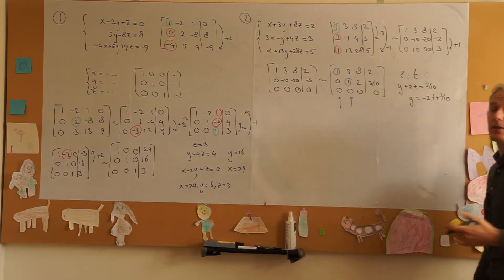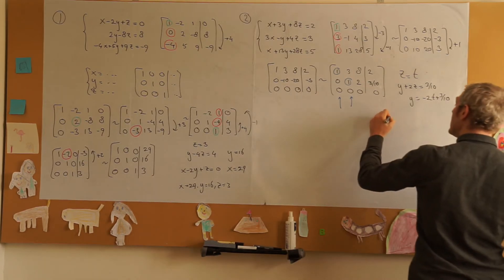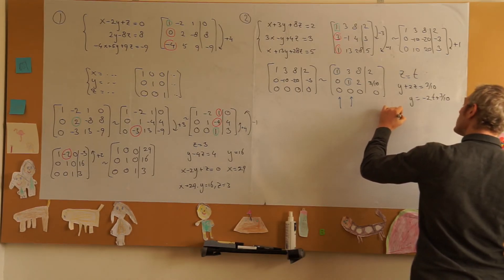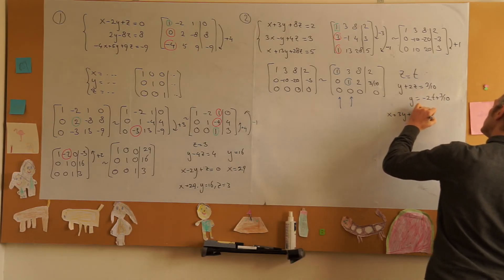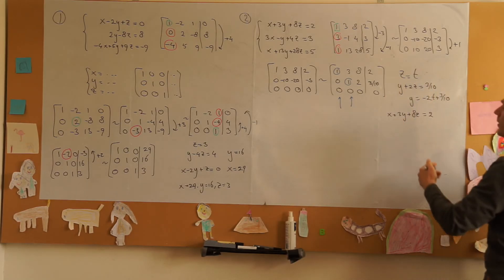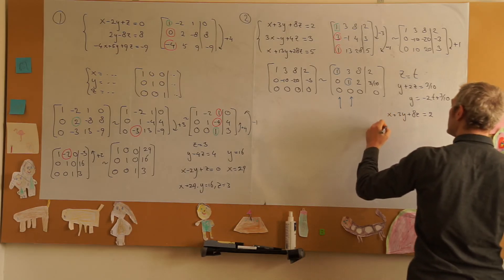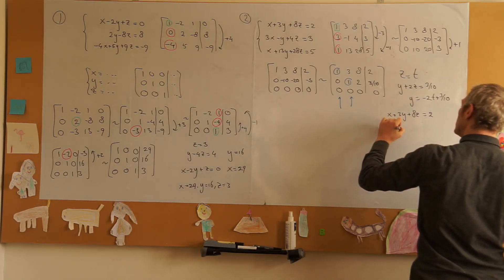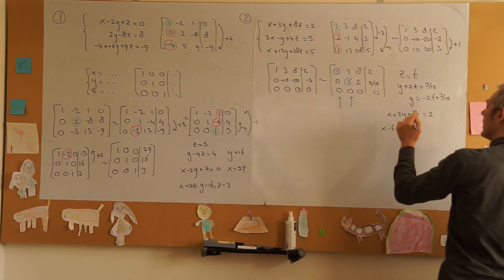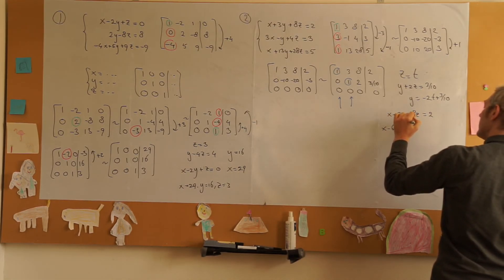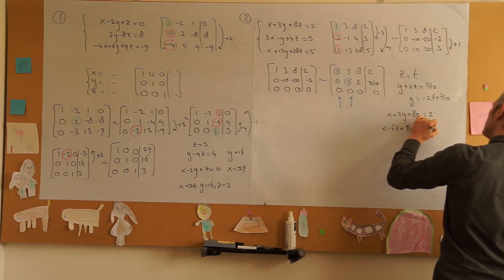So now we have our solution for y and x plus 3y plus 8z is equal to 2 and we can fill all this in and we find that x minus 6t plus 9 over 10. That's the 3y plus 8t is equal to 2.